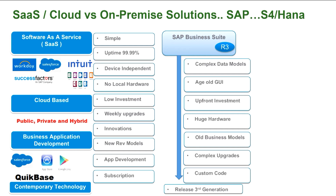SAP was clearly losing its business to other software vendors. For example, in CRM it lost to Salesforce.com, and as far as HR models are concerned it lost to Workday — that is the reason they came up with Success Factors to compete with Workday. Other software vendors like Salesforce itself started offering finance and procurement modules in the cloud, so SAP had to move quickly.